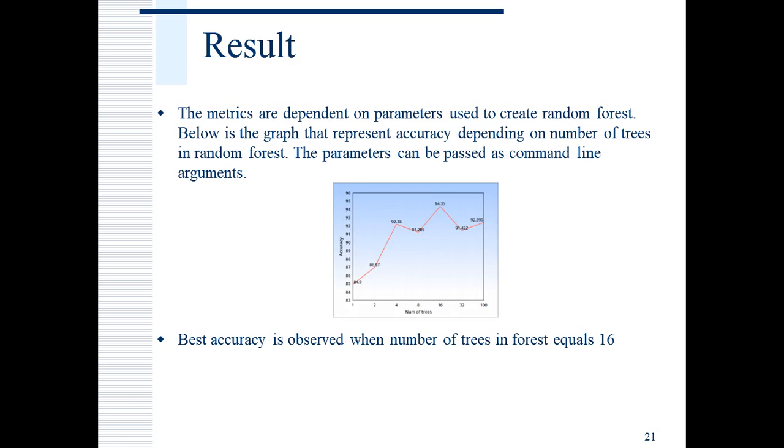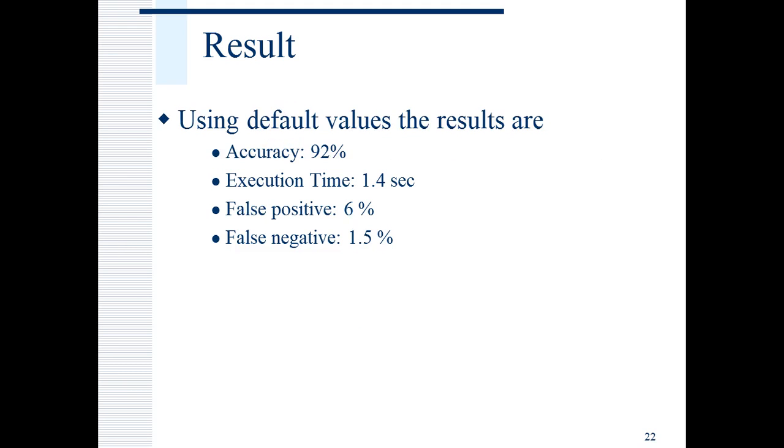As you can see, the results vary depending upon the number of decision trees. Accuracy is a function of the number of decision trees. The maximum is observed when number of decision trees is 16. Parameters can be passed by command line argument and this I have shown in the next video, the code demonstration part. Accuracy is lowest when number of trees equals 1. As in this case, random forest is simply a decision tree.